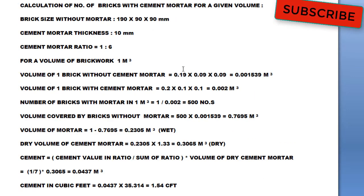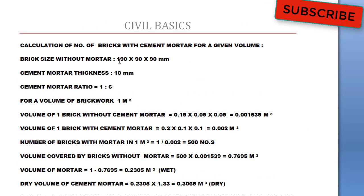Volume of one brick without cement mortar, that is 0.19 by 0.09 by 0.09. These values have been converted into meters. Now, volume of one brick with cement mortar. I'm adding to this 190 mm, 10 mm. So this will become 200 mm, 100 mm and 100 mm. So, 0.2 by 0.1 by 0.1.